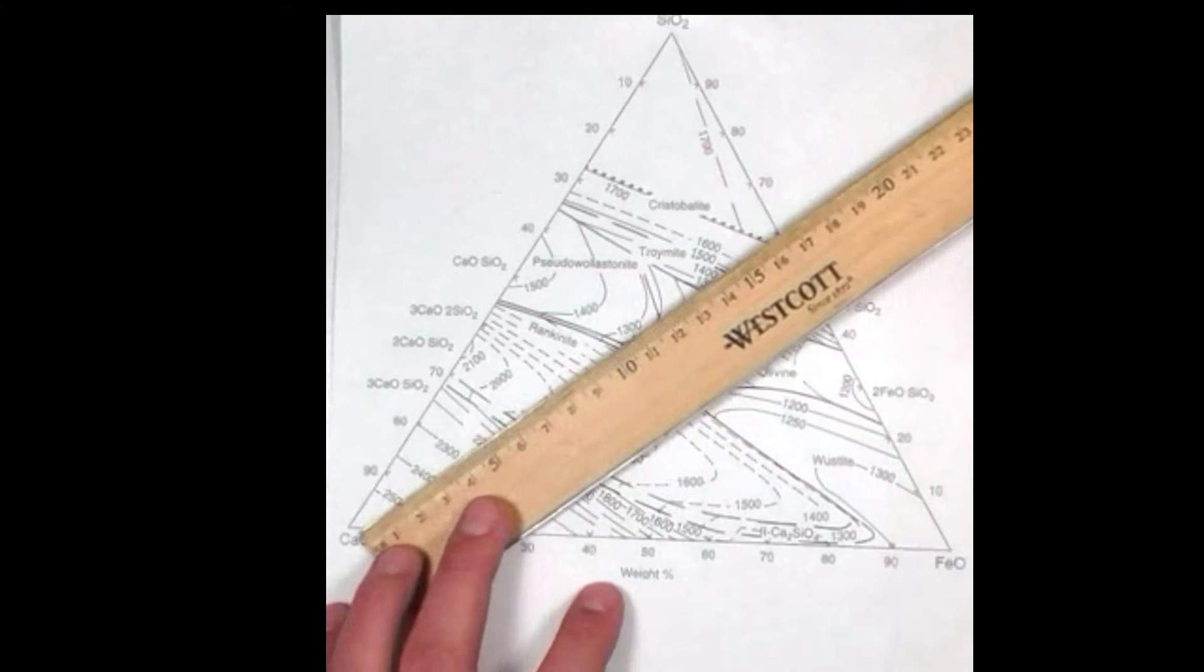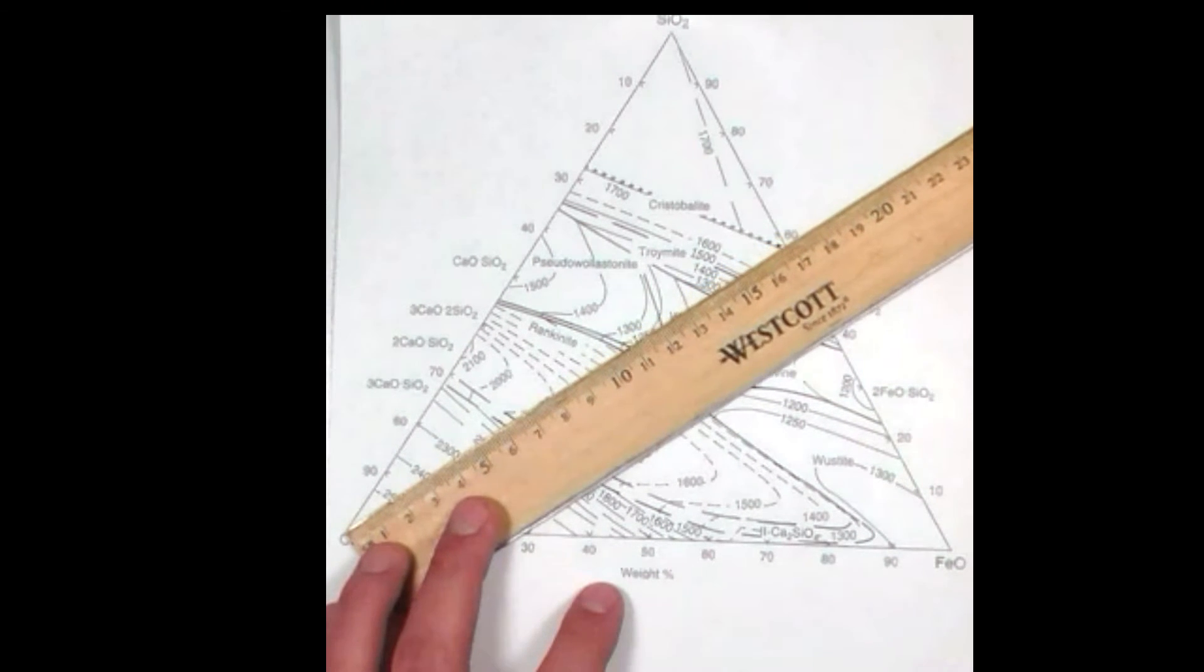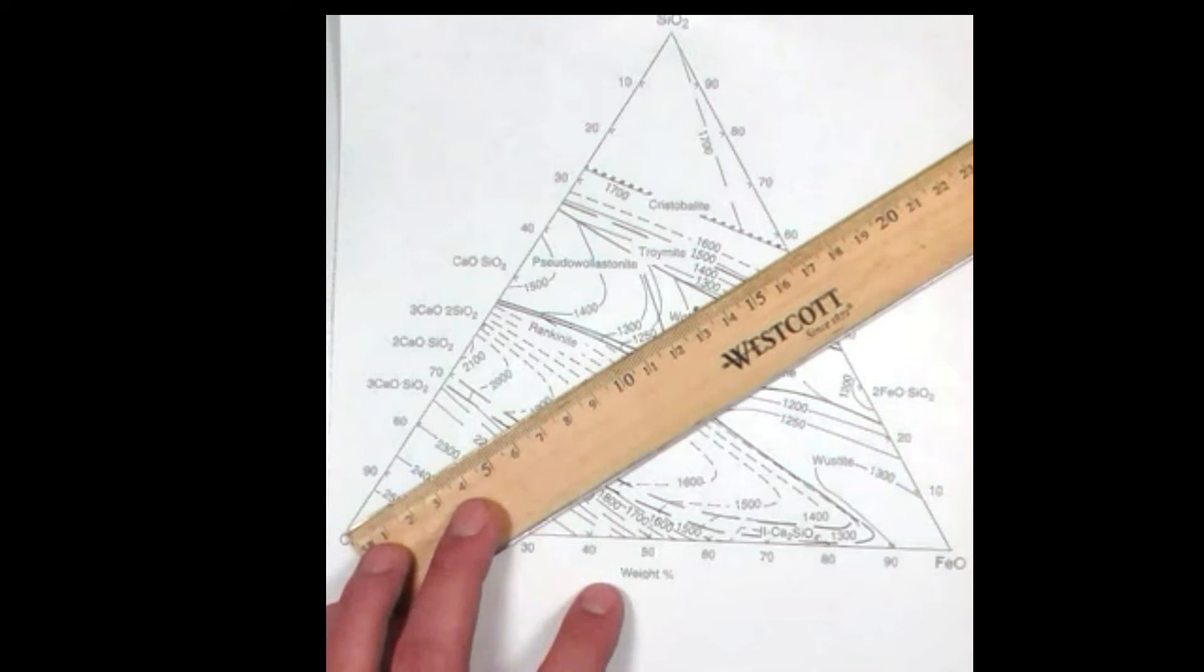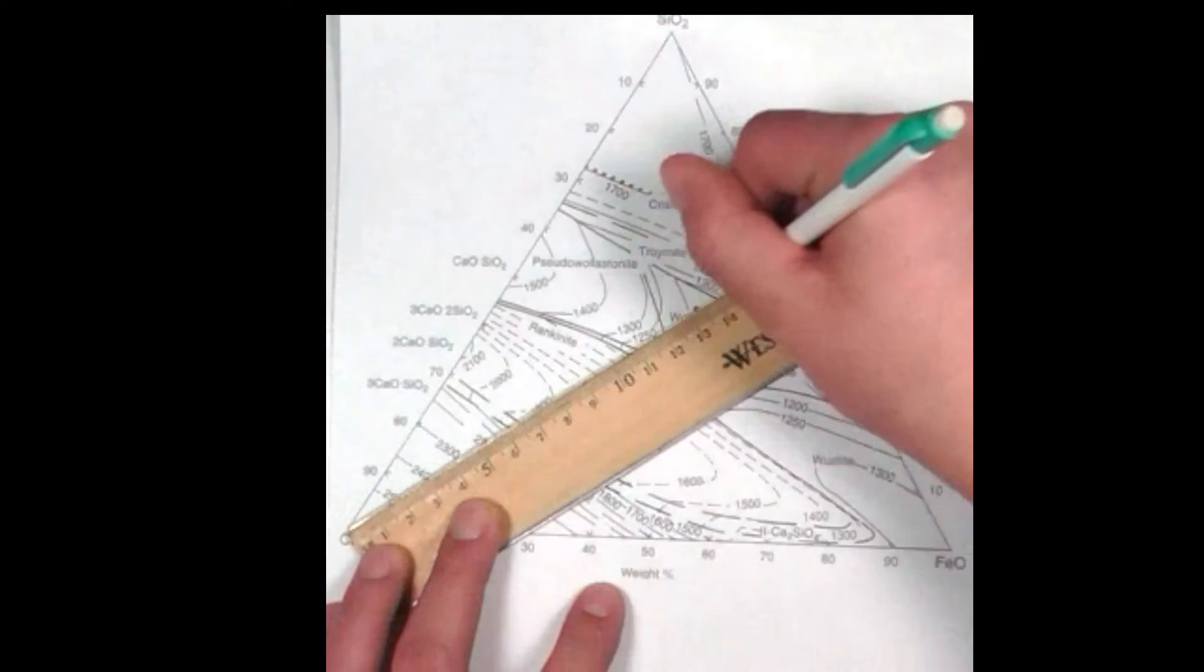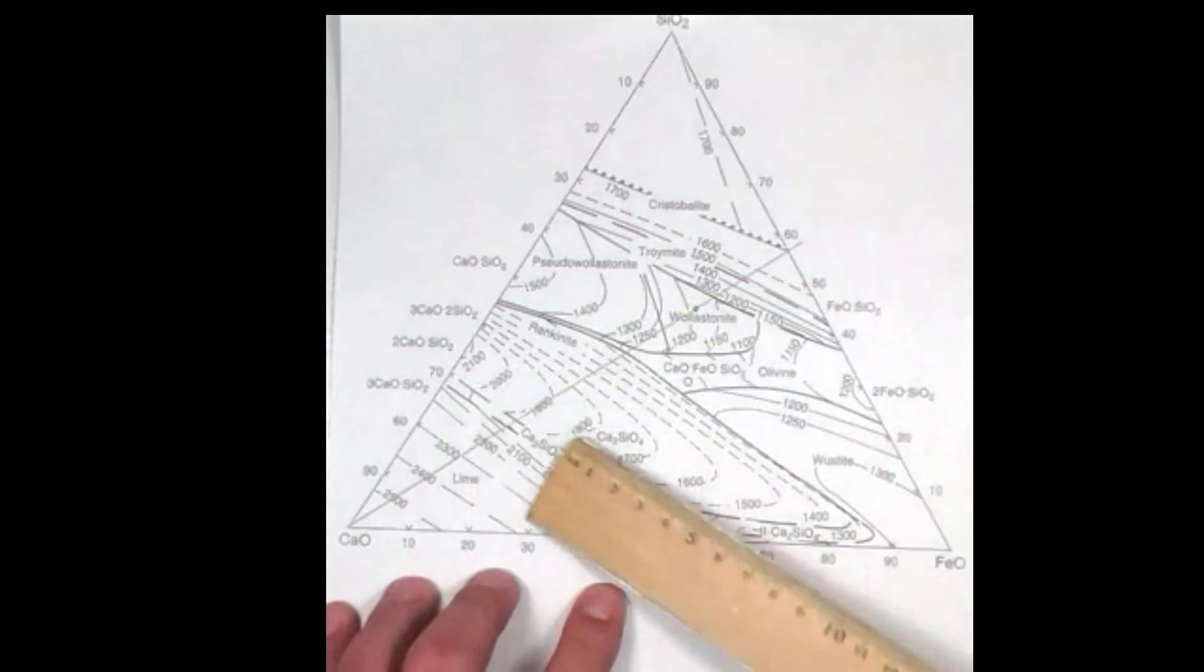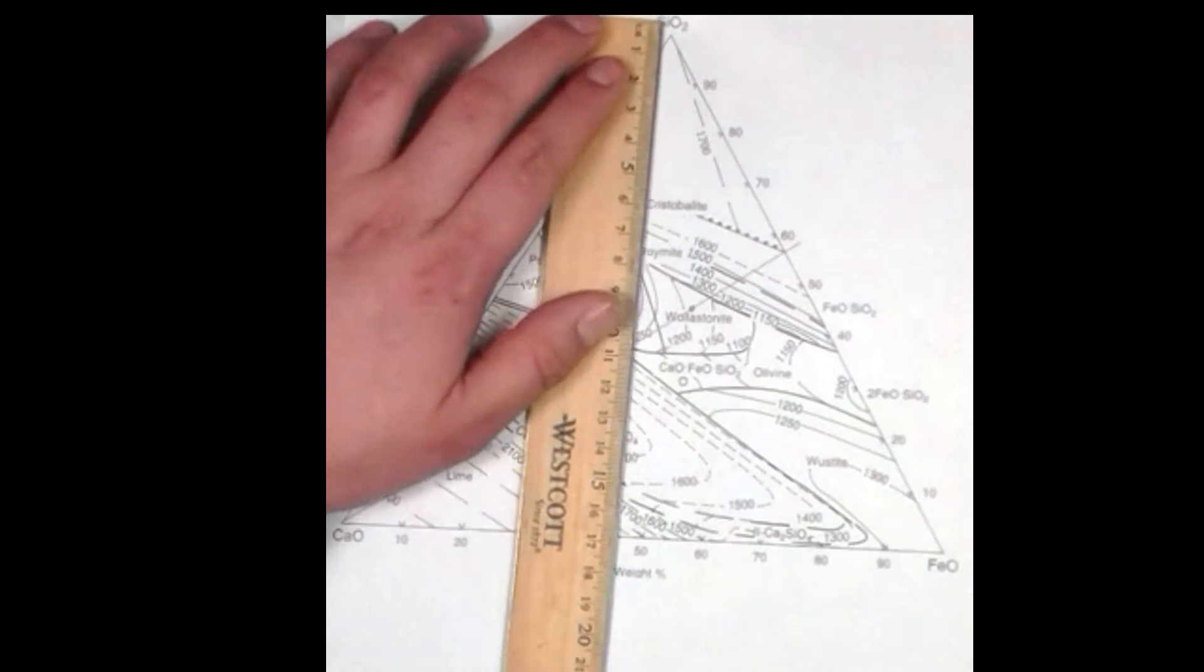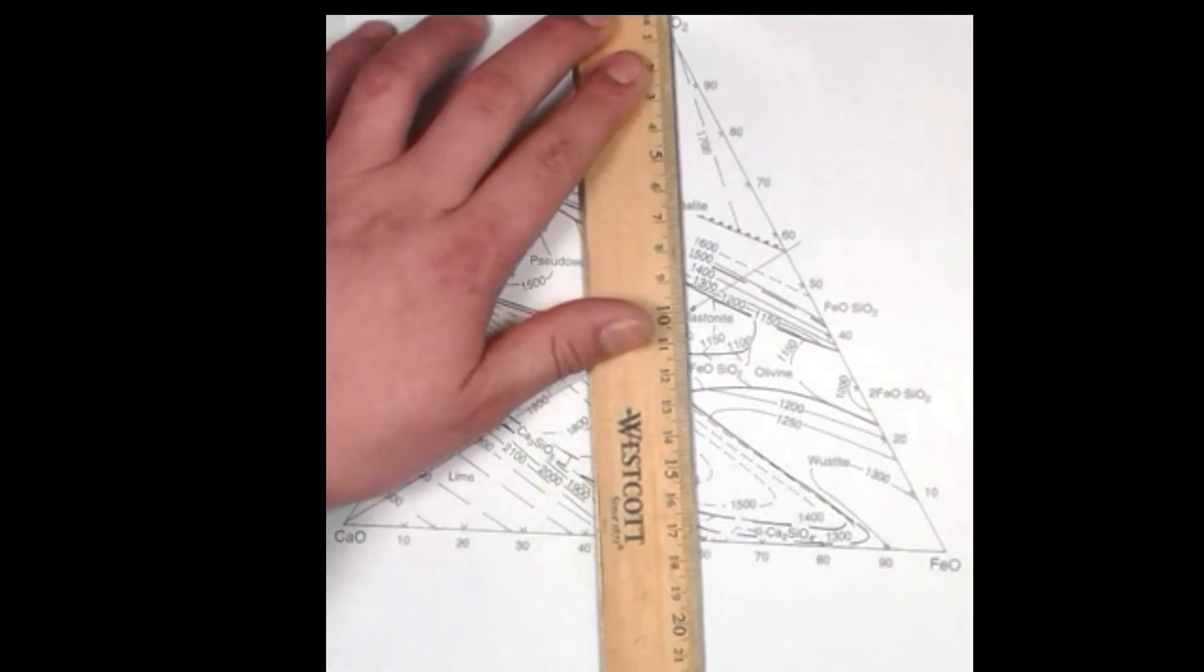We begin by drawing a line from the vertex through the point of interest. Now, we will repeat this process for each vertex.